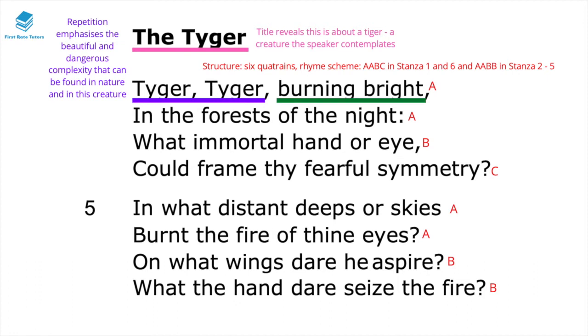In the first line, 'burning bright' — the alliteration here emphasizes the beauty of the tiger's appearance, its eyes and its fur. Bear in mind that the alliteration here is of the plosive sound B.